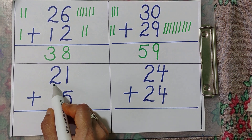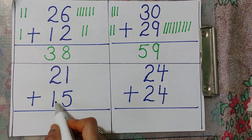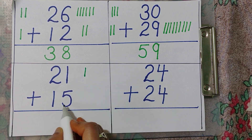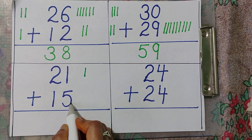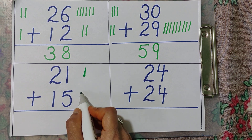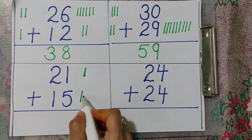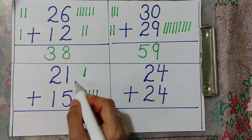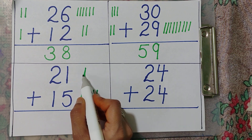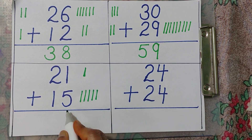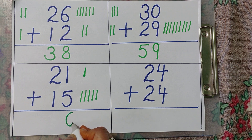Ones: one. Tens: one. One plus five. One ki one line and five ki five lines — one, two, three, four, five. Total: one, two, three, four, five, six.